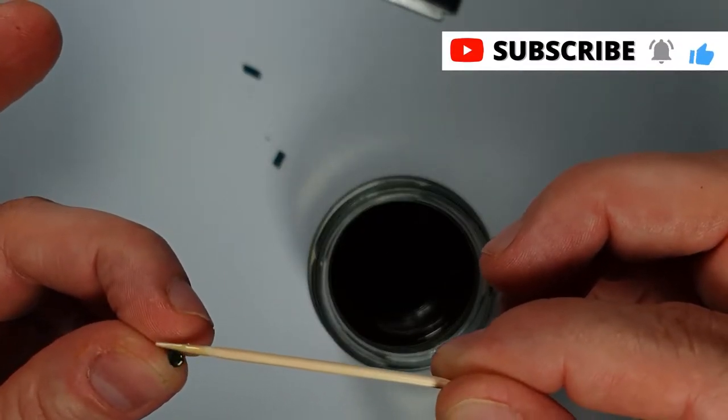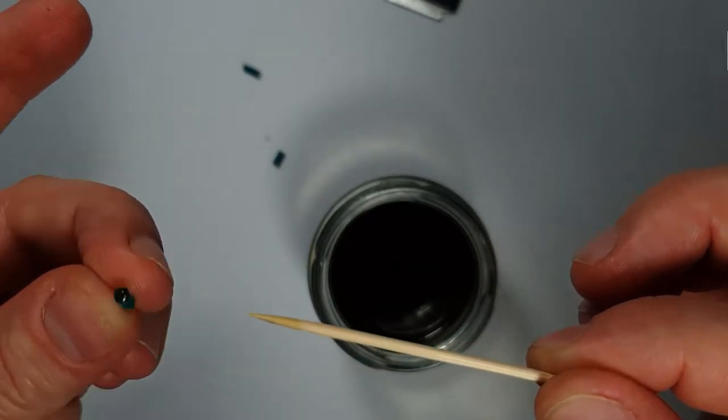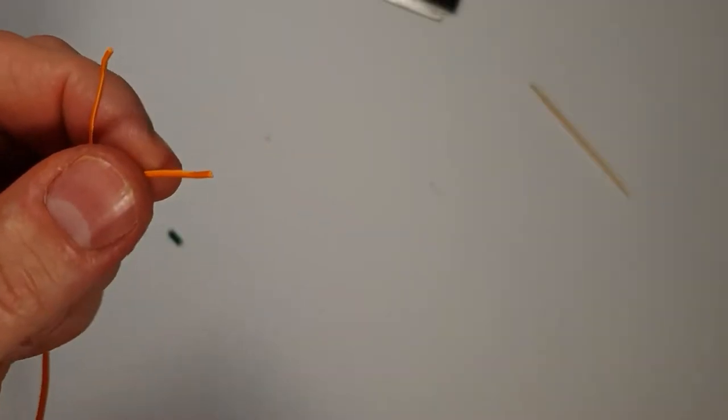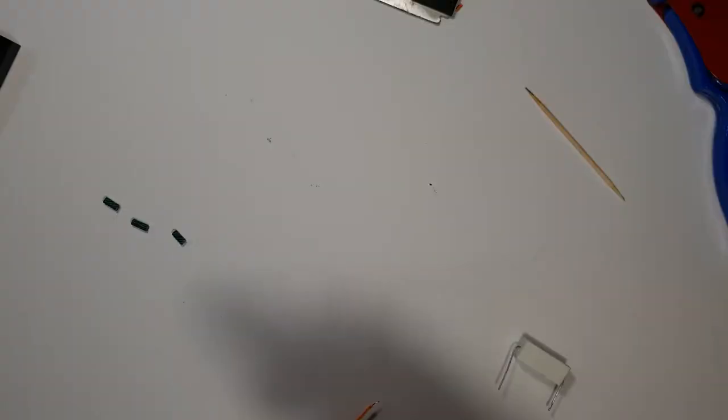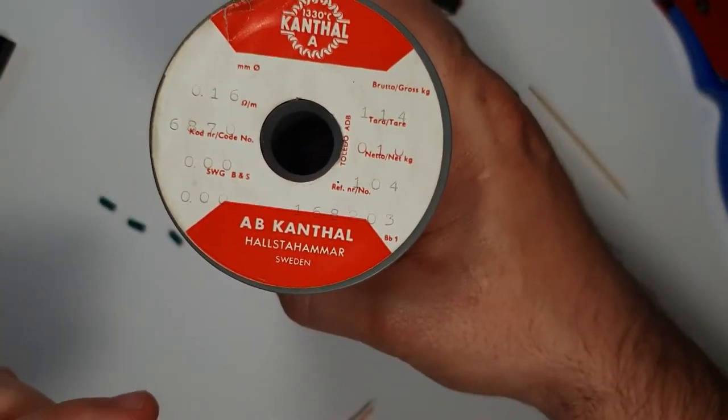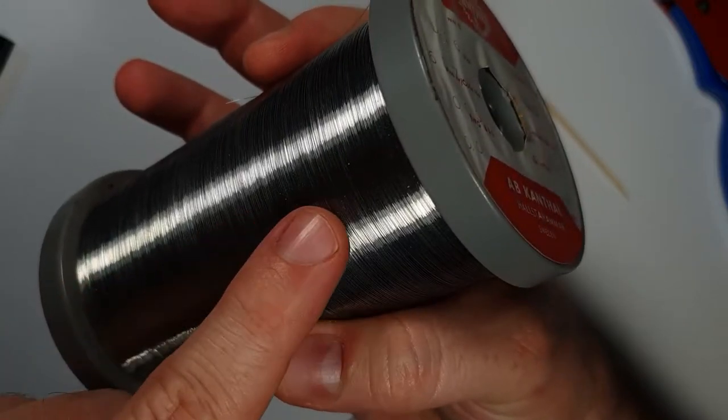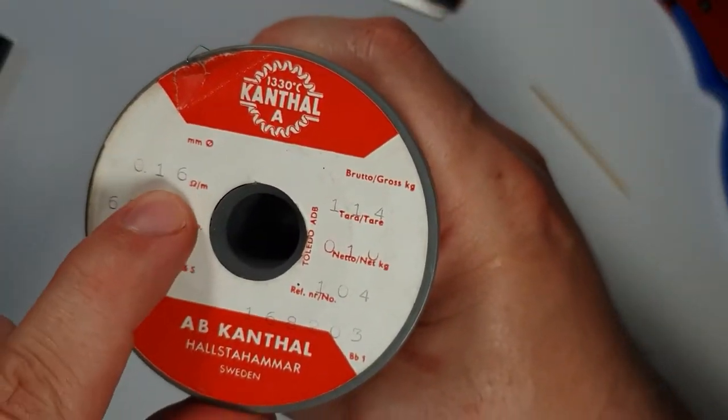If you don't have visco, I will show you a version later which uses normal matches. So I stripped the insulation from these copper wires and I'm using this cantal wire. It is very similar to nichrome. It's a 0.16 millimeter gauge.